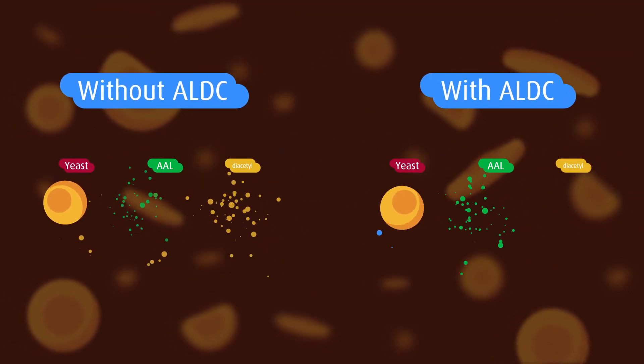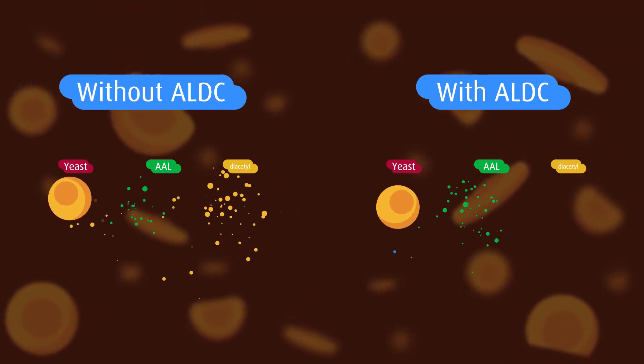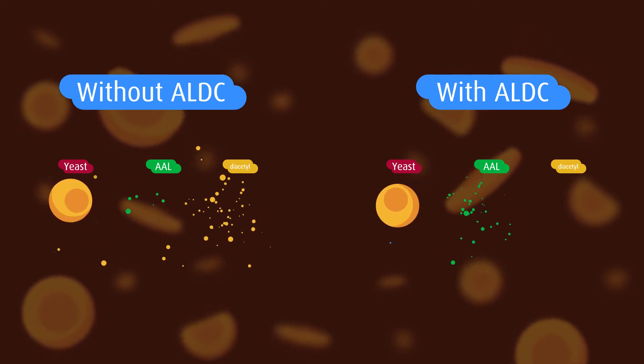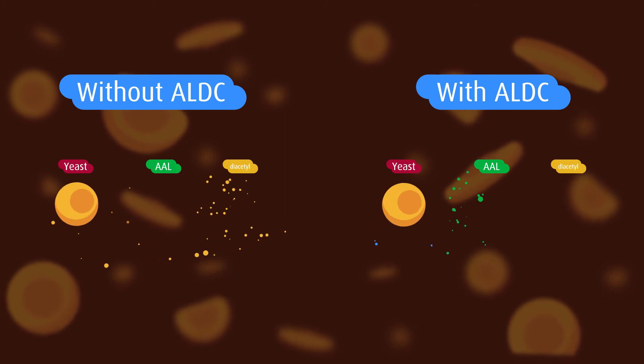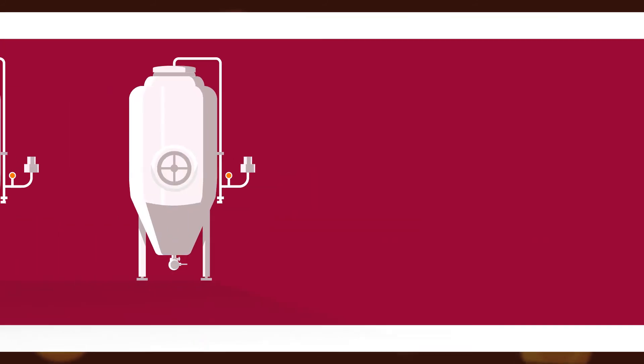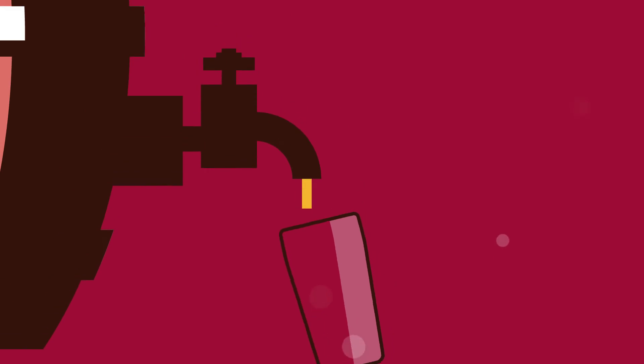Murphy & Sons ALDC is added at the beginning of fermentation. It causes the AAL to produce acetyl directly, avoiding the production of diacetyl altogether. No need for diacetyl rest. No buildup of AAL.